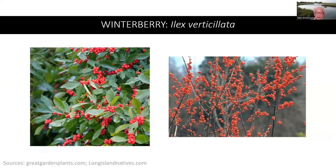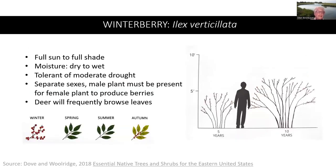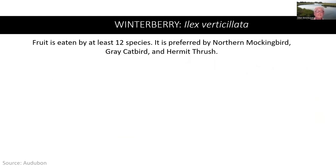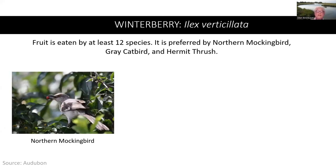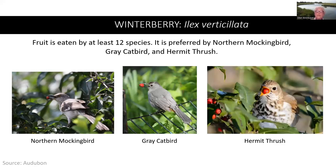Winterberry is a holly known for its profusion of small red berries from mid-autumn through winter. It looks beautiful with a background of evergreens or snow. The winterberry is tolerant of moderate drought. There are separate sexes, and the male plant must be present for the female plant to produce berries. Deer will frequently browse its leaves. The fruit of the winterberry is eaten by at least 12 species, and is preferred by the northern mockingbird, gray catbird, and hermit thrush.